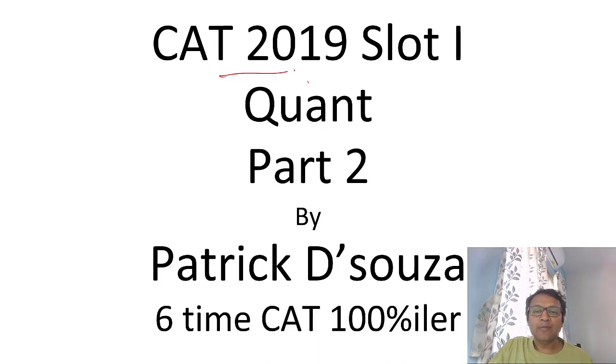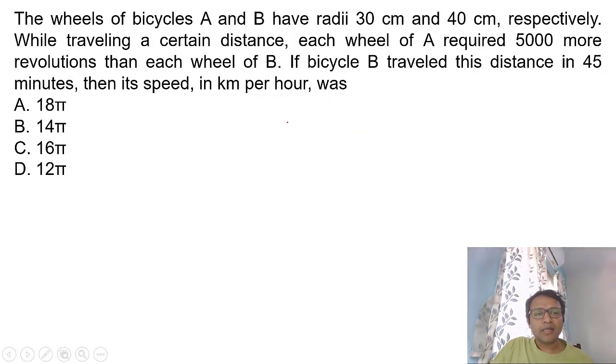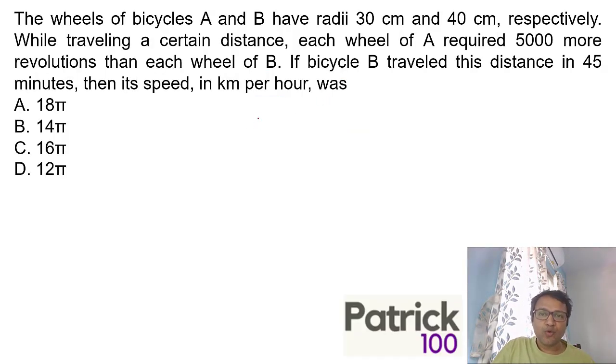We are doing CAT 2019 paper slot 1. Here I will be solving a few questions, taking up 5 questions and solving them. This is part 2 of the series. Let's look at it. It makes sense to first try to solve on your own before you look at the solutions.